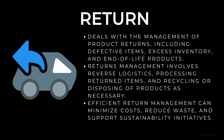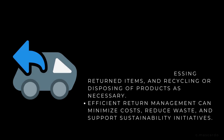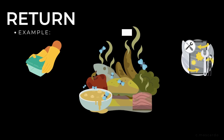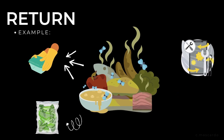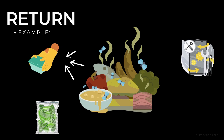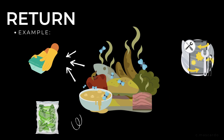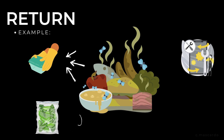Efficient return management can minimize costs, reduce waste, and support sustainability initiatives. An example for the return process is spoiled food. In this case, you may need to think about washing of containers, packaging, or returning of defective products.